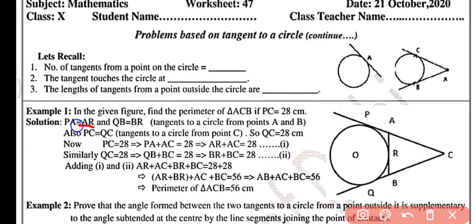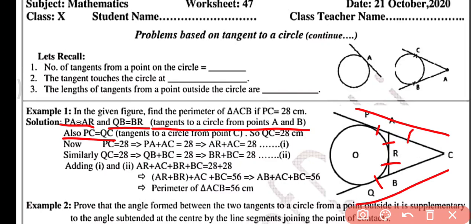PA equals AR — these are tangents from point A. Similarly, QB equals BR — these are tangents from point B. Also PC equals QC, as these two tangents are equal in measure from point C, so QC also equals 28 centimeters.